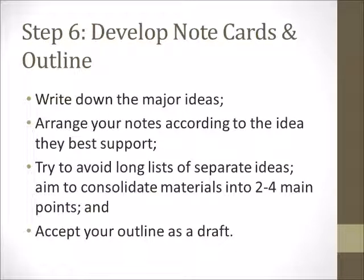Step number six is to develop note cards and outlines. You want to write down the major ideas and arrange your notes according to the ideas they best support. Try to avoid a long list of separate ideas — even though the research paper may be fifteen to twenty pages, you are primarily going to deal with only two, three, four, or maybe five main points. Identify those main points at this stage, organize them into the sequence you want to develop them, and remember to treat your outline as preliminary, just like your thesis statement.